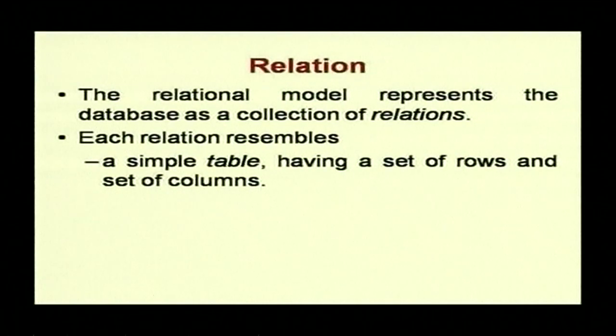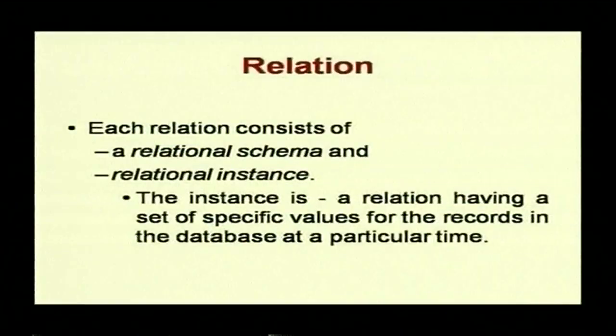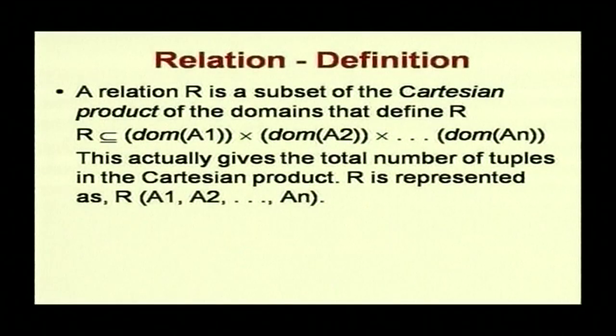Let us define what is meant by a relation. The relational model represents a database as a collection of relations or tables, and each relation resembles a simple table with a set of rows and a set of columns. Each relation consists of two parts: a relational schema and a relational instance. The instance is a relation having a set of specific values for the records in the database at a particular time — it keeps changing as time and values change. A relation can also be defined mathematically as a subset of a Cartesian product of the domains that define it.